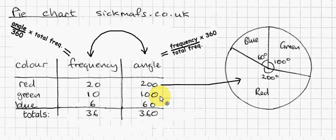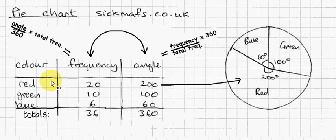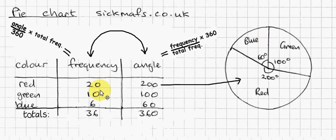This is a pie chart, and basically what you do in a pie chart is convert a table like this, which gives you frequencies, into a picture like this. So you can see most people have a red thing — let's imagine this is cars, we're talking about cars on the street. So most people on this particular street have red cars, some have green cars, and the least have blue cars. 20 people have red cars, 10 people have green cars, and 6 people have blue cars, so the least number of people have blue cars.